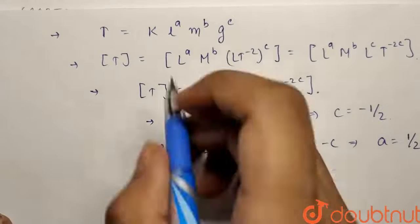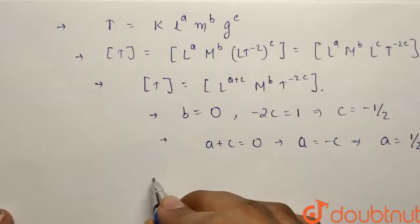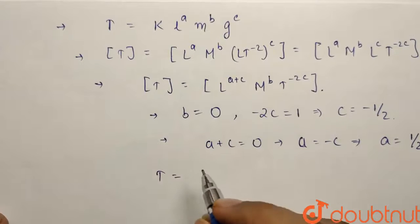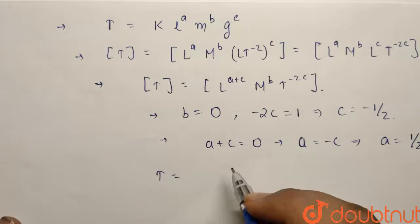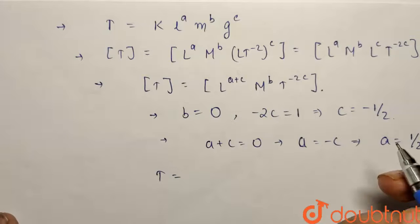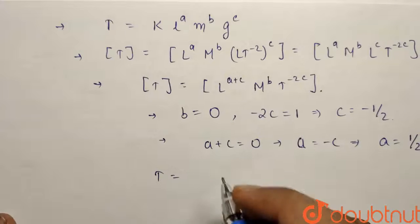So from using all this relation we can write that T will be equals to k. Now for k, for this case comes out to be 2π, we need not prove it, we can directly write it as we have to derive it dimensionally only.